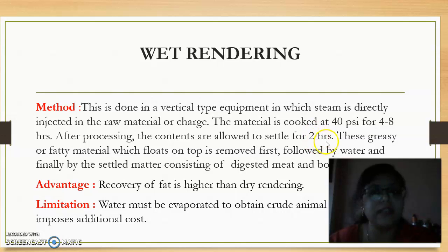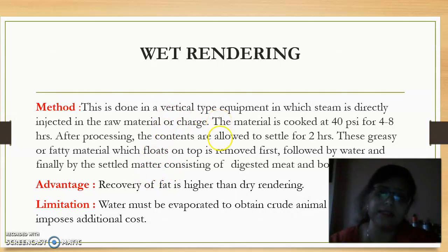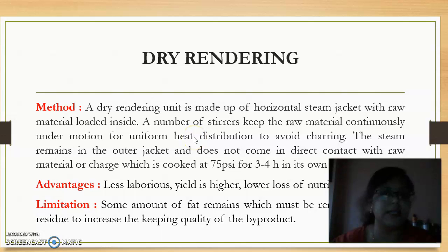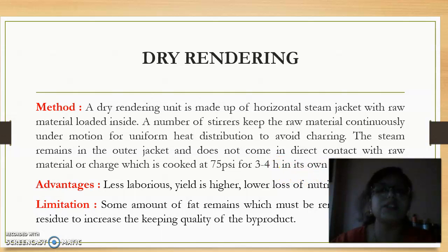After steam injection, the contents are allowed to settle for 2 hours. The fatty materials, being lighter, float on top, while water and settled matter remain at the bottom. The recovery of fat by wet rendering is higher than dry rendering, but an additional cost is incurred because water has to be evaporated from the crude animal fat. In dry rendering, steam is not directly injected, but stirrers are present to distribute the heat from the jacket to avoid burning of animal fat. This occurs at 17 psi for 3 to 4 hours without addition of moisture. The yield is good and there is lower loss of nutrients since external moisture is not used.